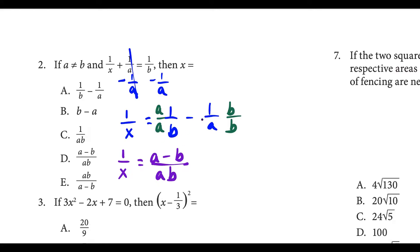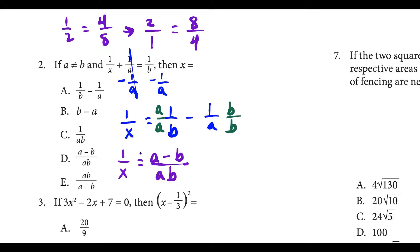Notice I have A over AB minus B over AB, which gets us there. Anytime you have one fraction equal to another fraction, you are allowed to flip both sides. You cannot flip all the fractions in the beginning because those were three separate fractions. But once you get it down to one fraction equals another, you can flip both sides and say X equals the reciprocal of the right side, which would be AB over A minus B. That's going to match choice E.